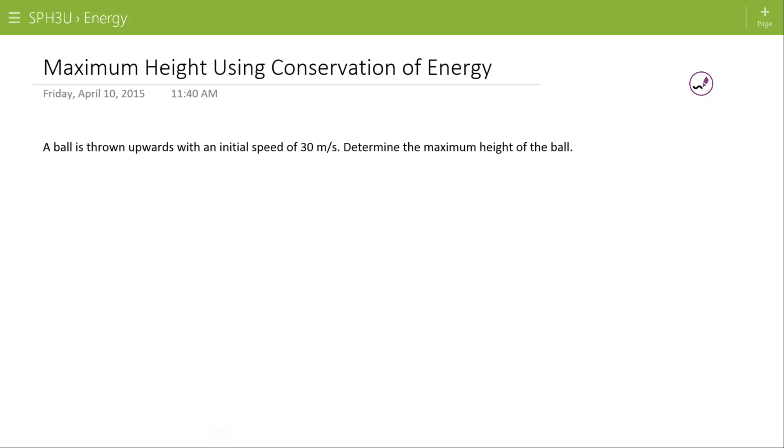A ball is thrown upwards with an initial speed of 30 meters per second. Determine the maximum height of the ball. So what we're assuming here, here's your ball and you're going to throw it straight up. It's going to go all the way up to the top, stop and turn around, and come back down.